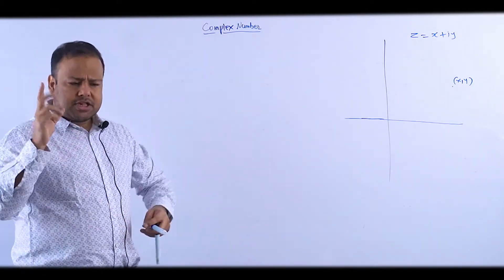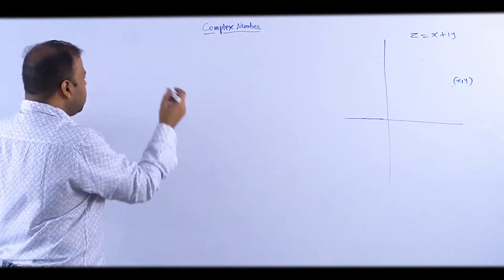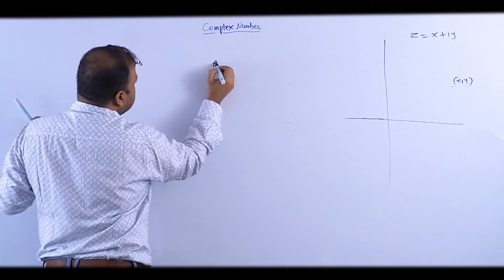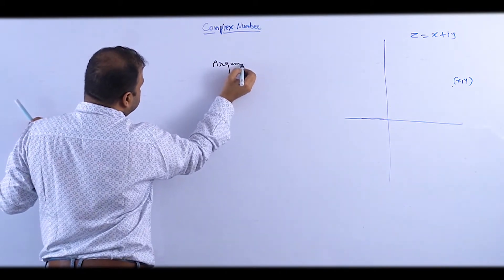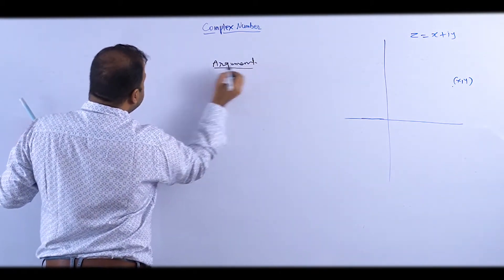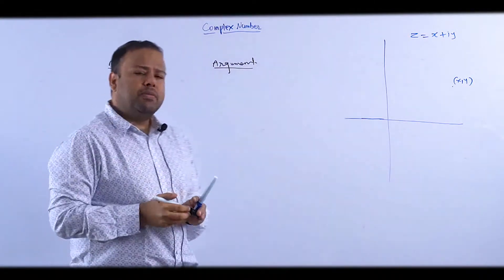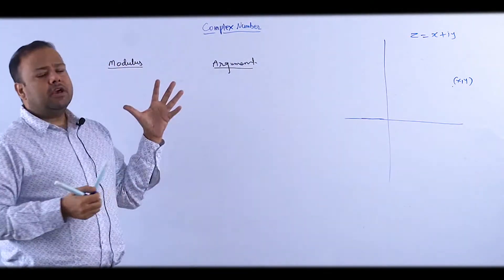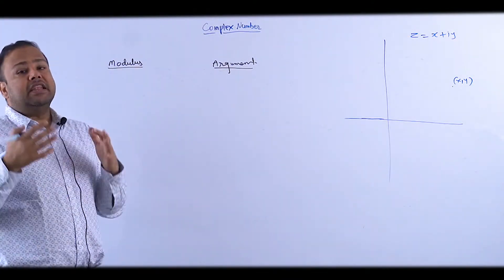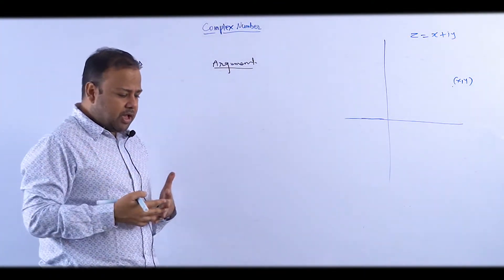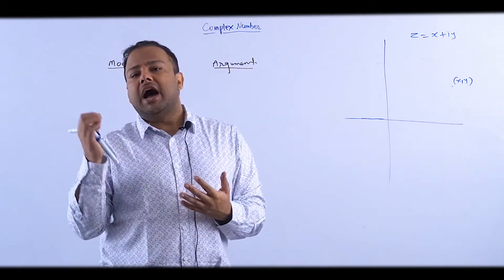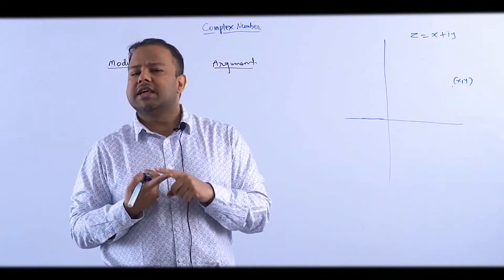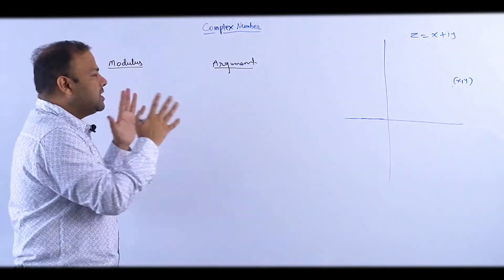We take two different things and those are called modulus and argument. So we can also define any complex number using modulus and argument, which are actually the polar coordinates of the number in the Cartesian plane. The polar coordinates are r and theta — if you don't know, that's the same as modulus and argument. This will be something new for you.